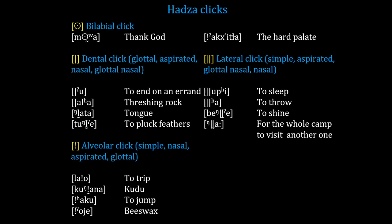Here are examples of the four clicks in Hadza. There is one example of a bilabial click that is nasalized. There are four examples of the dental click with glottal, aspirated, nasal, and glottal-nasal accompaniments. The same for the alveolar click with simple, glottal, nasal, and aspirated variants, and the lateral click is similarly displayed in four words, which will now be illustrated with spectrograms and audio waveforms.